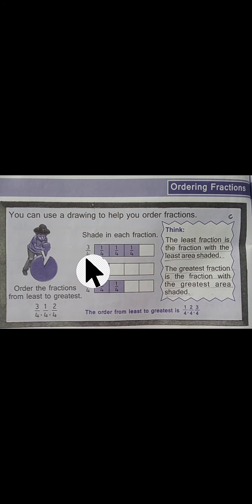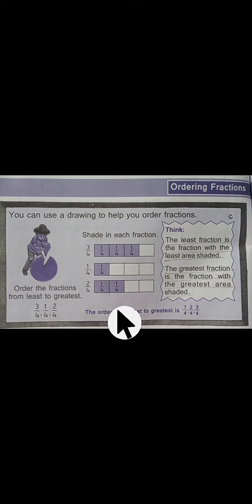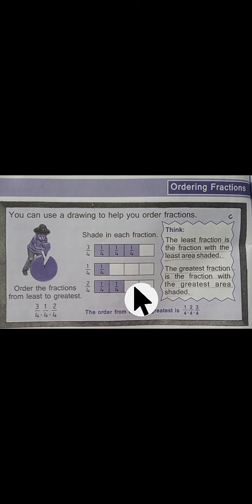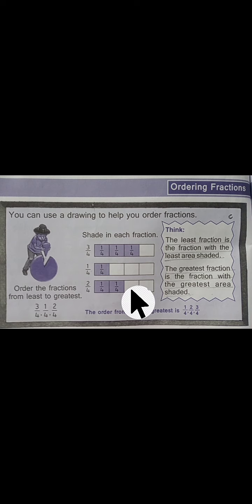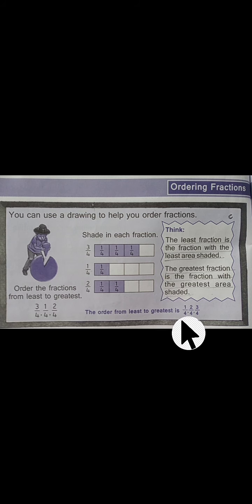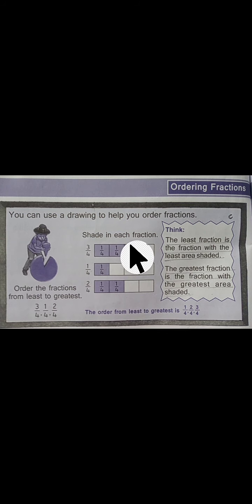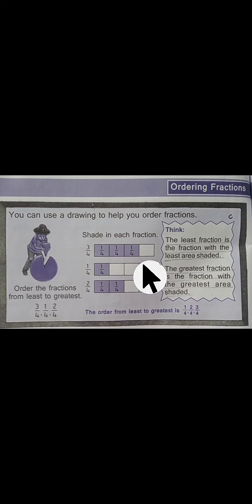You can see the strips very easily. If you have to write ascending order — smallest to largest — you have to write 1 by 4, then 2 by 4, and then 3 by 4. Ascending order means arranging from the smallest value to the biggest value.